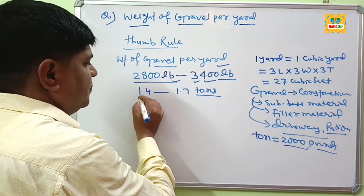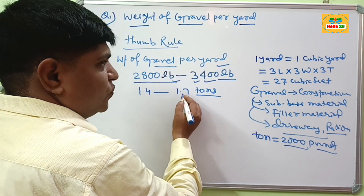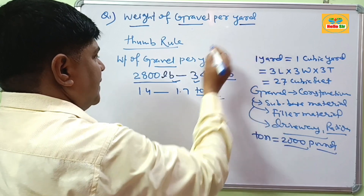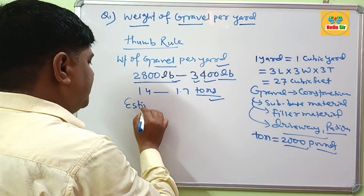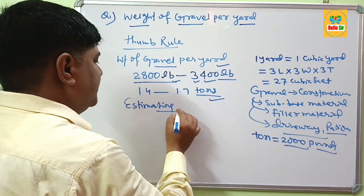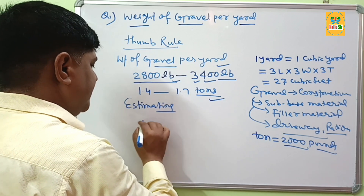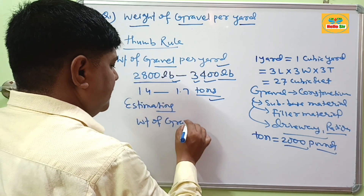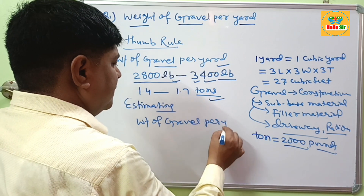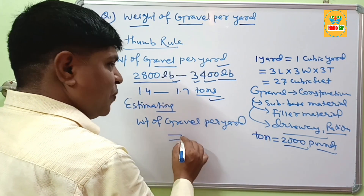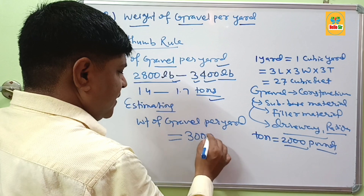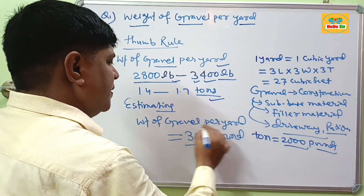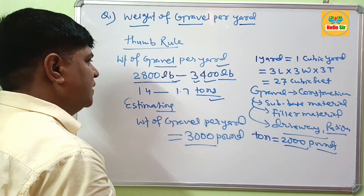This is the average weight of gravel per yard — 1.4 tons to 1.7 tons. But for estimating purposes, we take the weight of gravel per yard as approximately 3000 lb, and this approximate weight is used for various calculation processes.